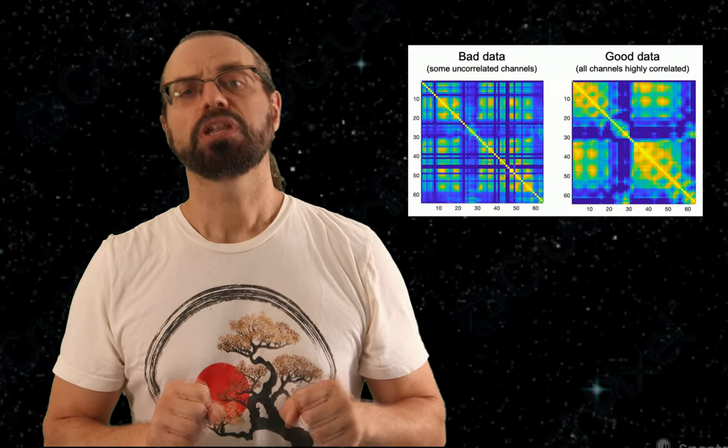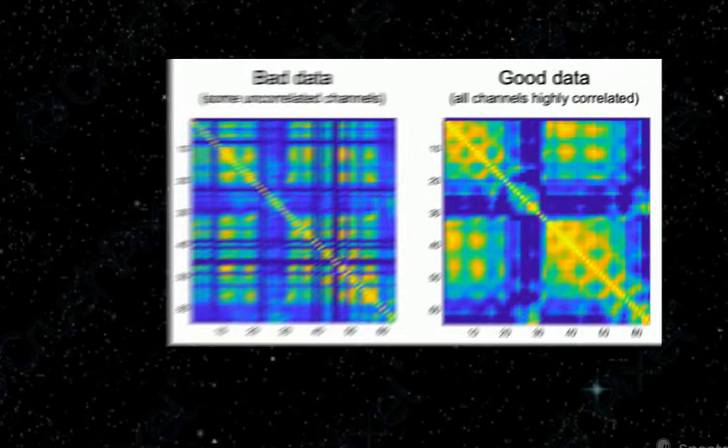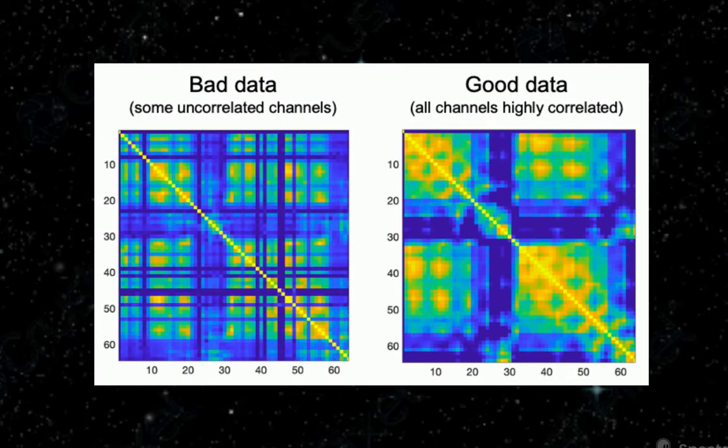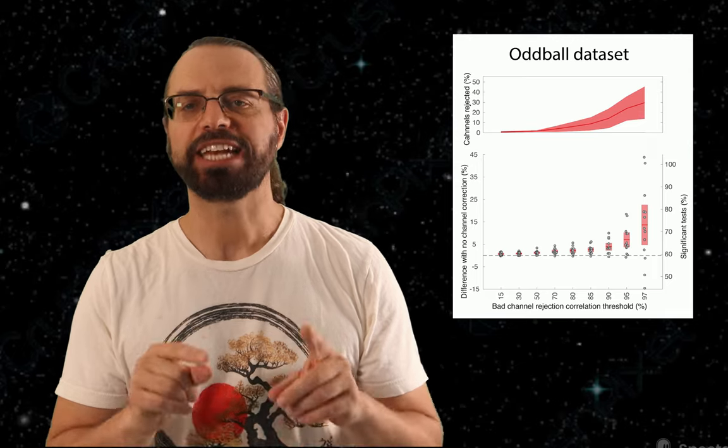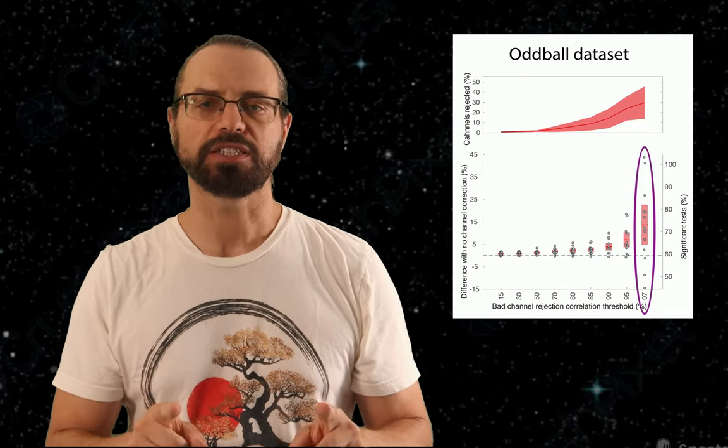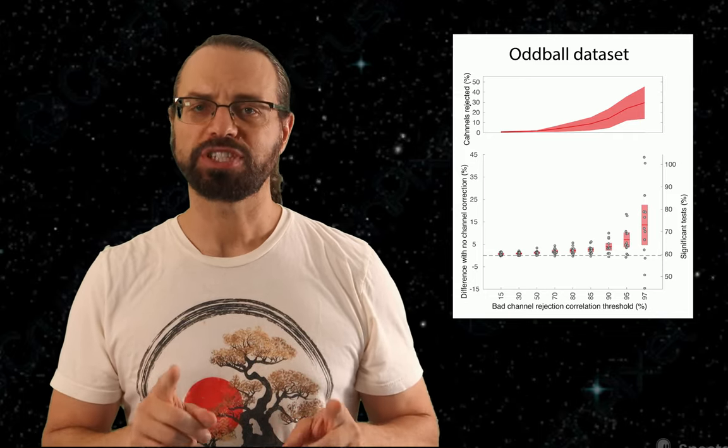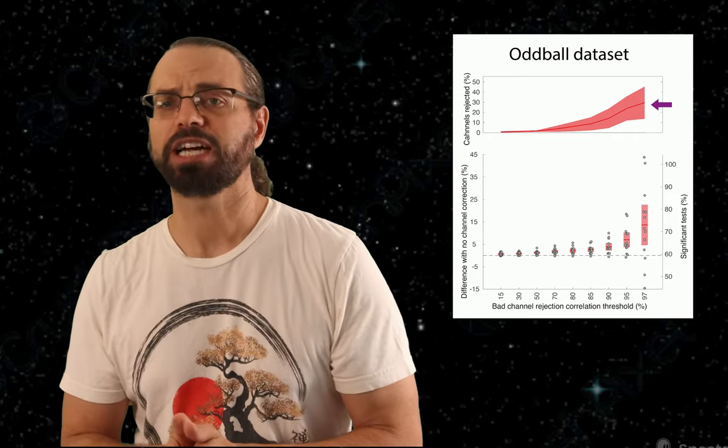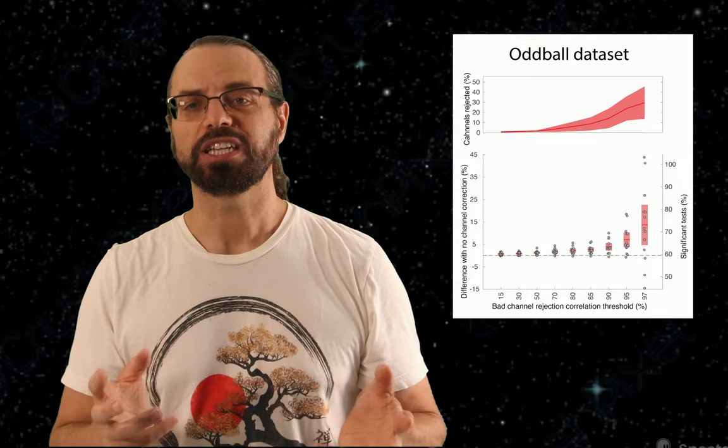Finally, we tested different methods in EEGLAB. Unlike the other software we tested, we had to choose because there are 34 plugins in EEGLAB to reject artifacts. We focused on the default methods included in the core EEGLAB distribution. First, EEGLAB allows the detection of bad channels based on their correlation with each other. A channel that is not correlated with others is likely an artifact. We have found that removing channels correlated less than 95% for the face and 97% for the oddball dataset increased significance. However, the 97% threshold also removed 30% of the channels on average, so it is not realistic to use it in practice.